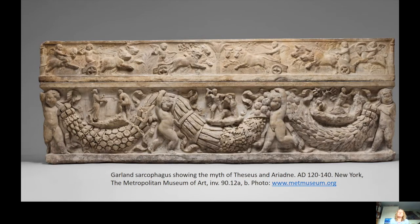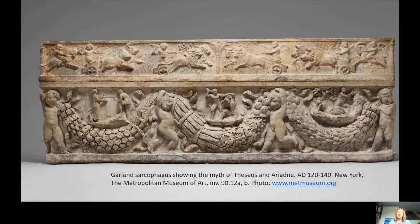Now I want to think about how this same myth was shown in a funerary context, looking at three sarcophagi. Sarcophagi are marble chests built to contain the body of the deceased, coming from the 2nd century AD onwards — reflecting a change in Roman funerary practice from cremation to inhumation, the actual burial of the body. Only the wealthiest people would have a marble sarcophagus, so we're looking at a fairly elite sector of society. The earliest example is a garland-type sarcophagus from the Hadrianic period, now in New York, originally from Rome.